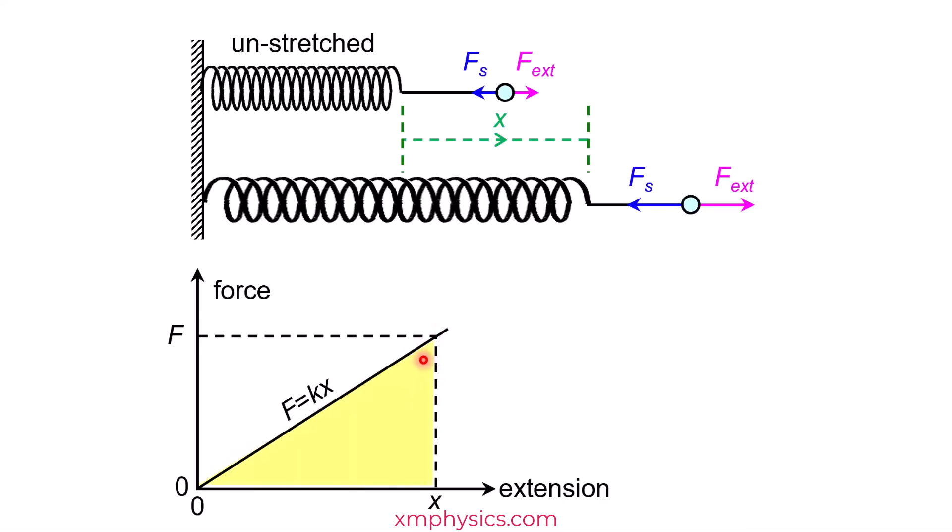So what is the work done by the external force? It's the area under the force extension graph, isn't it? So the elastic potential energy stored in the spring is exactly equal to the work done by the external force, which is represented by this triangular area here. Which is half base times height, so half F times X.